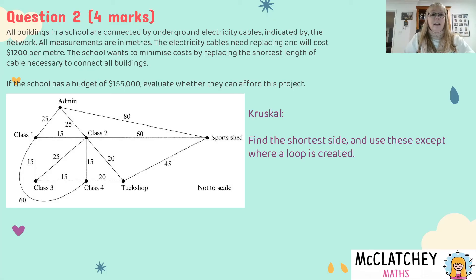So every different building will be reached and it'll be reached without any loops or without any enclosed network spaces. So what we do with Kruskal's algorithm is that we find our shortest side. So looking at our network the shortest side is the side with the 15 meters and we go up in stages.